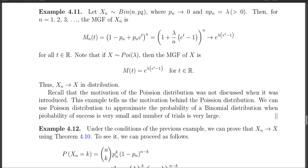So Xn has a Binomial(n, pn) distribution such that pn → 0 and npn = λ, which is strictly greater than 0. We want to see whether Xn converges in distribution and, if so, to which random variable. We use the moment generating function, since we know the MGF of Xn with Binomial(n, pn) distribution. The MGF of Xn is (1 − pn + pn·e^t)^n. Because npn = λ, we can write pn = λ/n.